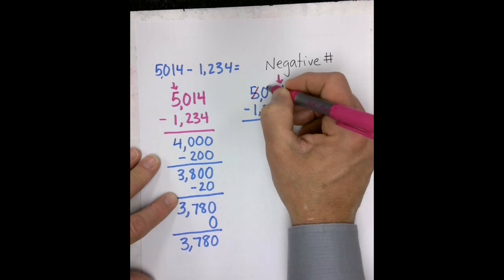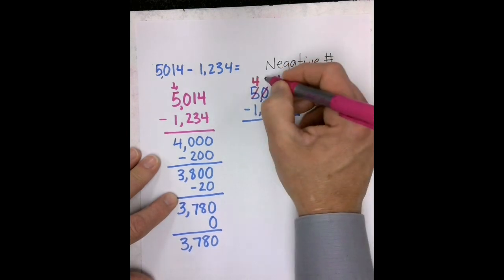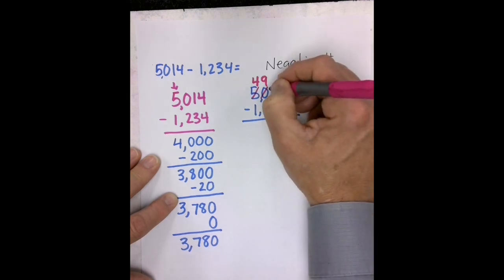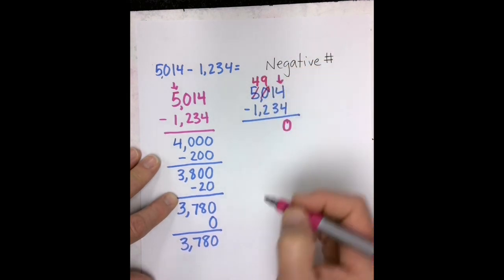So this 50, to bring 1 over, ends up becoming 49 tens, and we add one 10 to the one we had before, which would be 11.